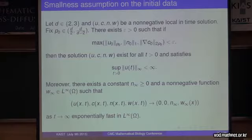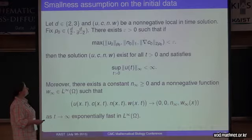Then there exists a constant n infinity positive and a non-negative function w infinity, such that u, c, n, w converge to 0, 0, n infinity, and w infinity, and this is exponentially fast in time. So if the initial data are small, then we have global existence.